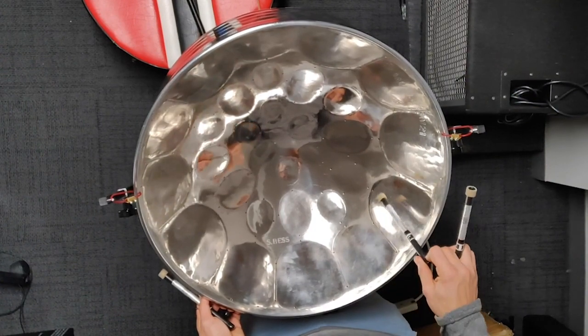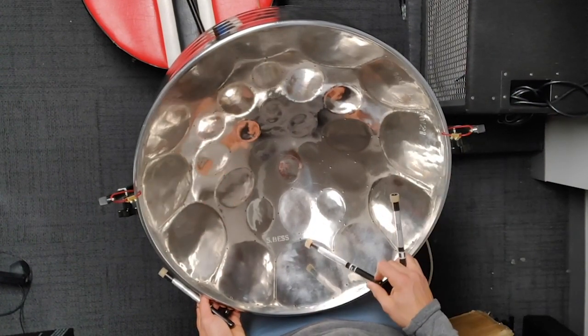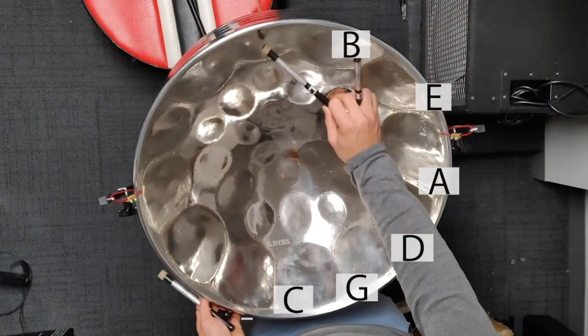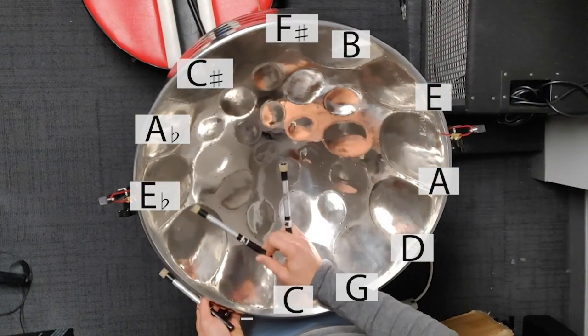If we go to our right, we're going up in fifths. So we have C, G, D, A, E, B, F sharp and so on, all the way back to C.